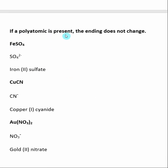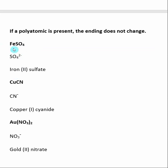Likewise, if a polyatomic is present, the ending does not change, and remember that polyatomics have a defined charge — this defined charge allows us to determine the charge on the transition metal. For FeSO₄, the element to the left is a transition metal. I can see sulfate, SO₄²⁻, with a negative two charge. Because iron and sulfate are in a one-to-one ratio, iron must have a plus two charge to make the compound neutral. So the name is iron(II) sulfate — we do not change the ending on the polyatomic name.